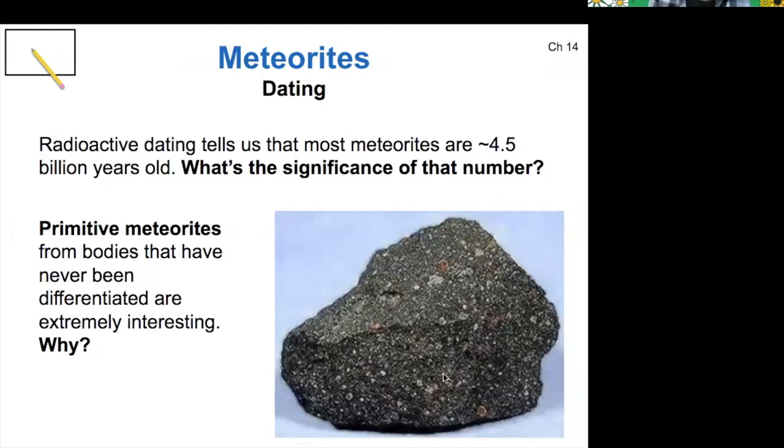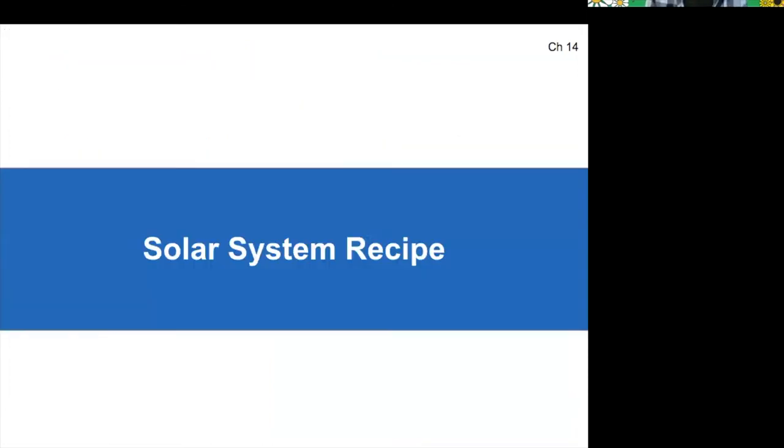So primitive meteorites that have not been differentiated, these are essentially raw materials from the very beginning of the formation process of the solar system. These raw materials are really interesting to look at because this is kind of the only way that we have to tell how old the solar system is.